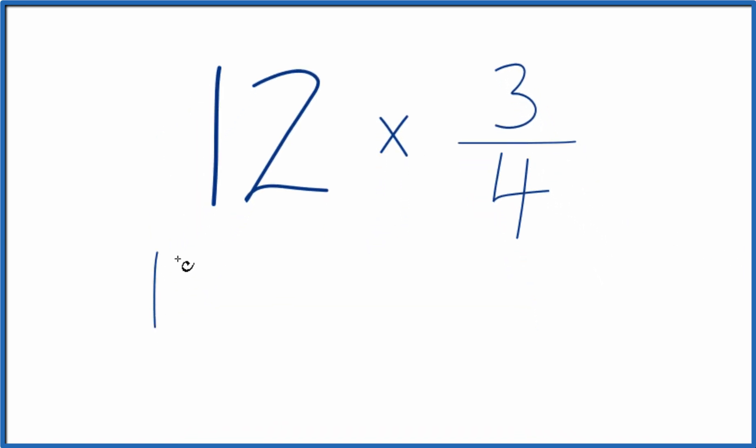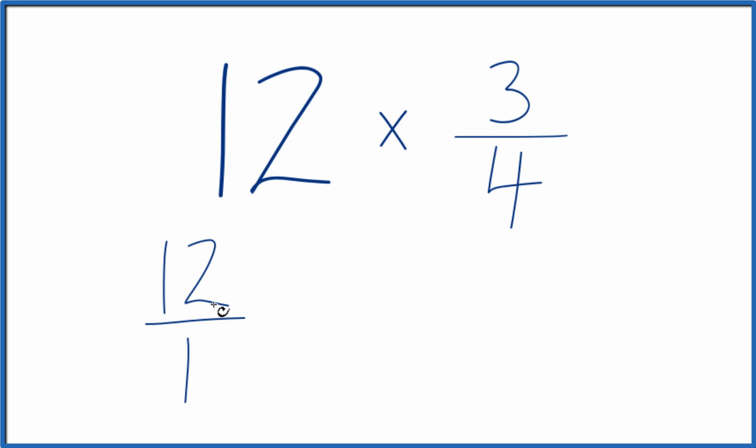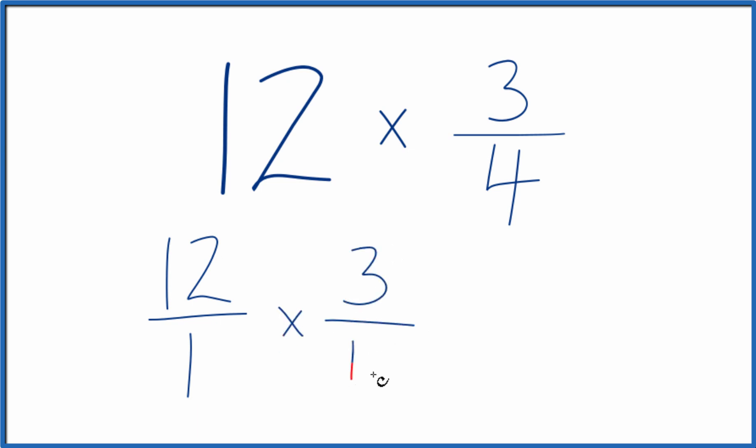Probably easier to think of 12 as 12 over 1. We're just dividing by 1, so it's still 12. But now we have a fraction, and we can multiply that fraction by 3 fourths.